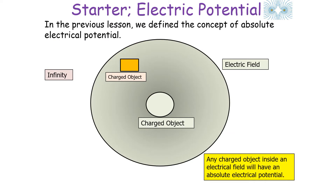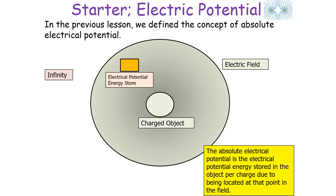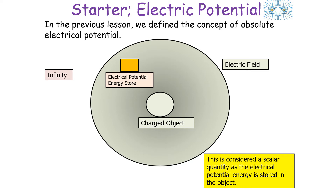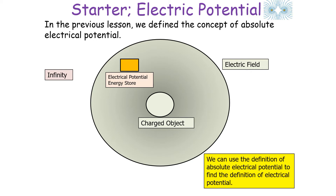In the previous lesson we defined the concept of absolute electrical potential. Any charged object inside an electrical field will have an absolute electrical potential — this is the electrical potential energy stored in the object per unit positive charge due to being located at that point in the field. Electrical potential energy is a scalar because it's stored in an object, but it's an absolute quantity as it's not dependent on any other factor except the electrical field.